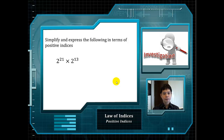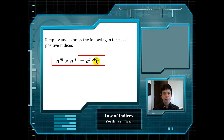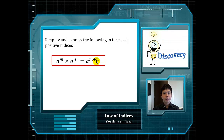By simply adding the powers, we will get 2 to the power of 34. Even in general terms like a to the power of m multiplied by a to the power of n — do take note that these two have the same base — we can simply add up the powers. And hence, we will have our very first law of indices. Laws of indices are actually just some ways of manipulating the powers.